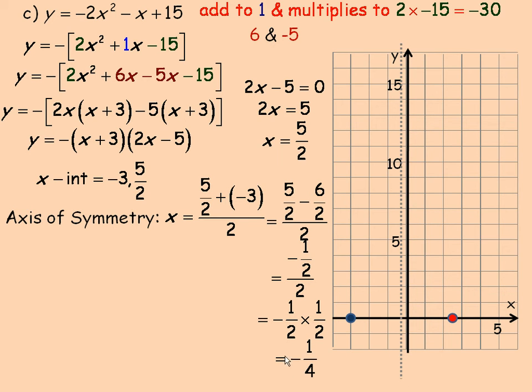Remember that also means that the vertex's x-coordinate is negative 1 quarter. We need now just to find the y-coordinate. And so we take that negative 1 quarter, and we're going to substitute it in the original parabola, in place of x.